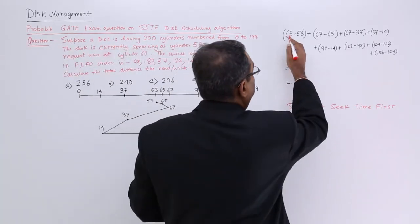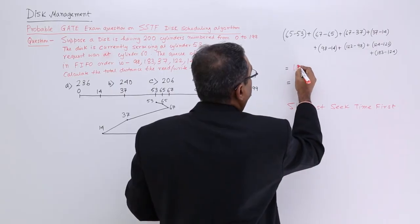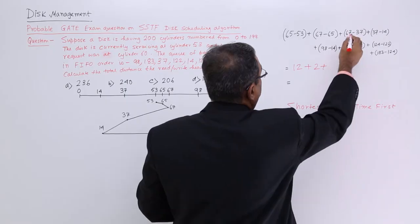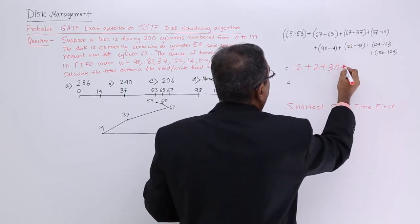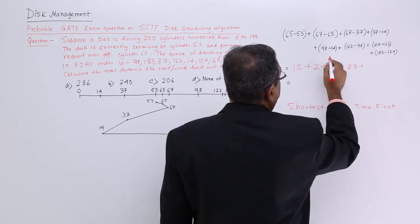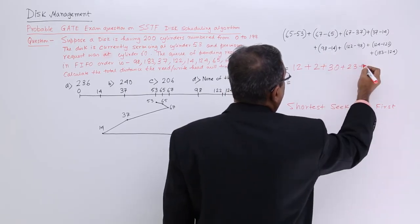Let me go for the calculations. It is quite obvious: it is 12, and it will be 2. I shall come back with 30. 37 minus 14 will be 23. 98 minus 14 will be 84.